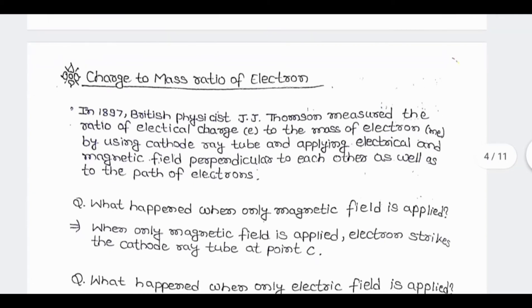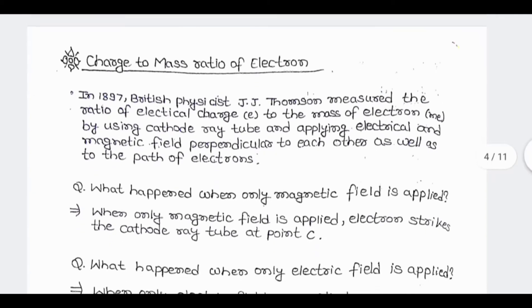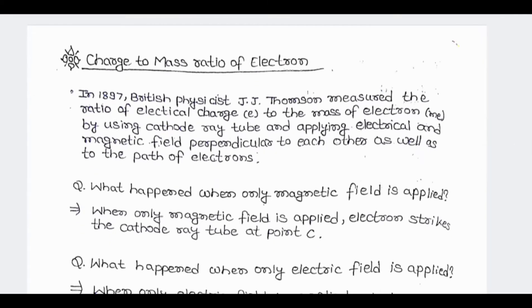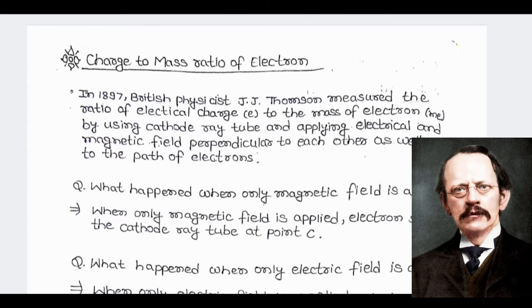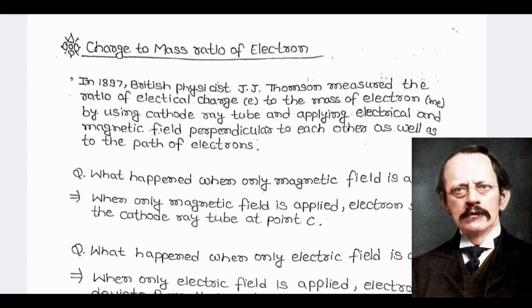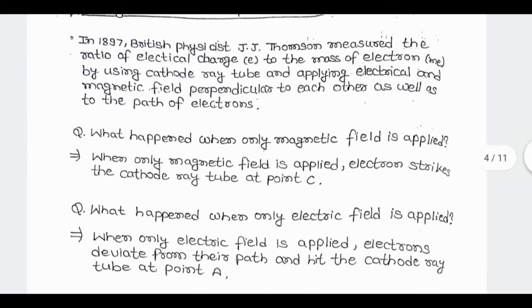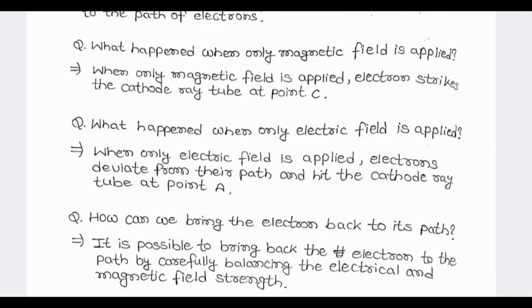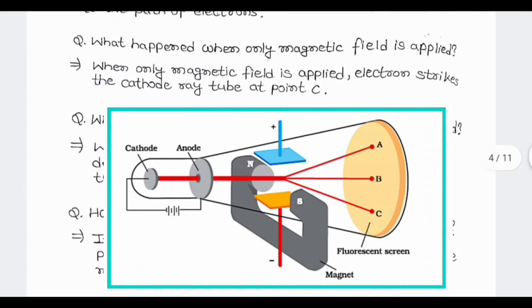Charge to mass ratio of electron: In 1897, British physicist J.J. Thomson measured the ratio of electrical charge to the mass of electron by using cathode ray tube and applying electrical and magnetic field perpendicular to each other as well as to the path of electrons.